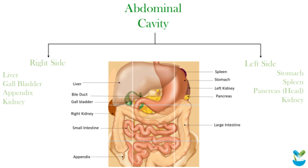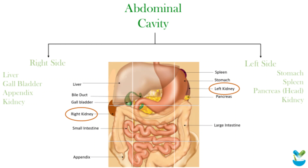The stomach, which is the main digestive organ, the spleen, and the pancreas are on the left-hand side. As we have a pair of kidneys, one is on the right-hand side and the other on the left-hand side in the abdomen. The right kidney is pushed by the liver, so it sits slightly lower than the left kidney. The abdomen also includes the small and large intestines, and all abdominal organs are covered by the peritoneum.